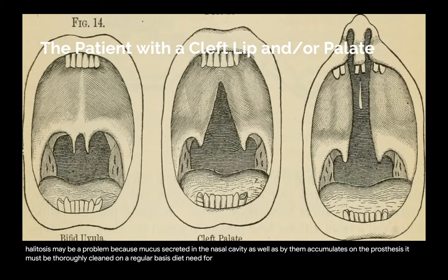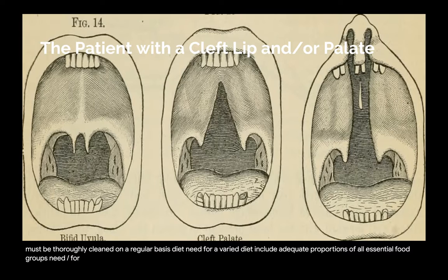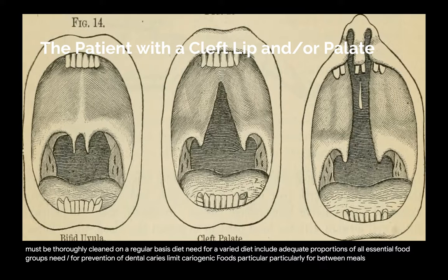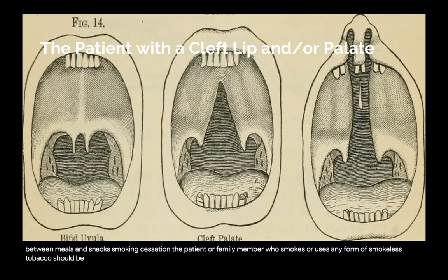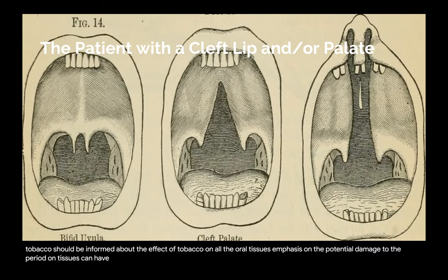Diet: there is a need for a varied diet including adequate proportions of all essential food groups, and a need for prevention of dental caries by limiting cariogenic foods, particularly between meals and snacks. Smoking cessation: the patient or family member who smokes or uses any form of smokeless tobacco should be informed about the effect of tobacco on all oral tissues. Emphasis on the potential damage to the periodontal tissues can have special significance for the patient with a cleft palate. Offer assistance with a smoking cessation program.